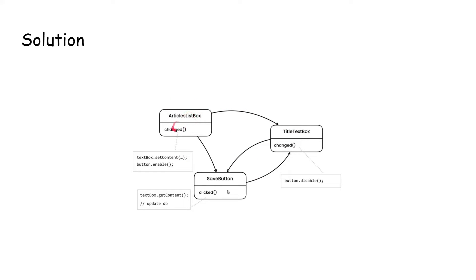One way to solve this is to have objects depend directly on each other. When the list box changes, it depends on the text box and the button; when the button changes, it depends on the title and text box. But you can see it will be really hard to track which object is dependent on which, and if we have more UIControls it will be very hard to maintain.